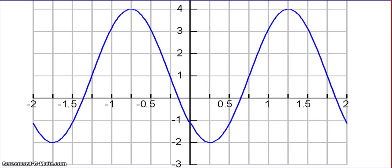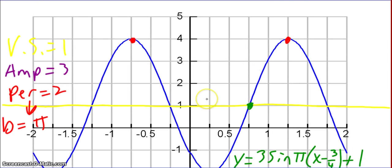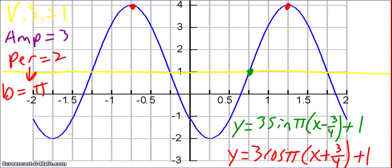Last problem: find a sine and a cosine curve to represent this curve. Pause the video and unpause when you're ready to check your answer. Right away, recognize a vertical shift of positive one, an amplitude of three, and a period of two. If the period is two, then b equals pi, because two pi divided by pi equals two. For the sine function, I picked the point at three fourths — or 0.75 — on the axis of y equals one, giving y equals three sine of pi times the quantity x minus three fourths, plus one.